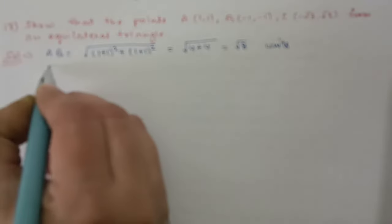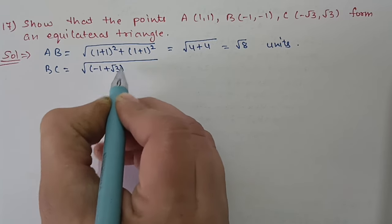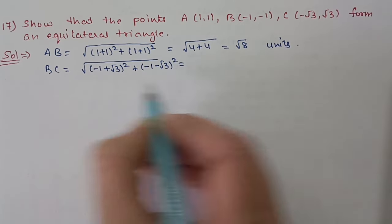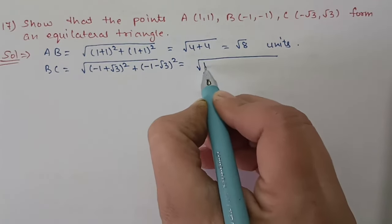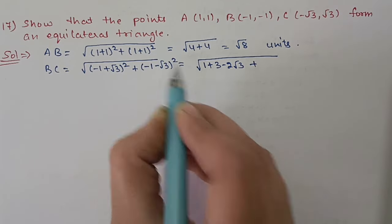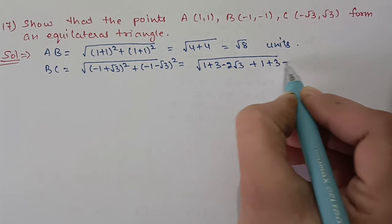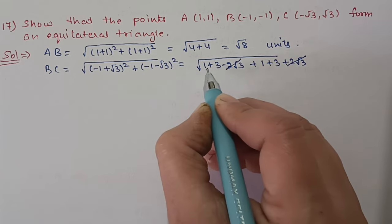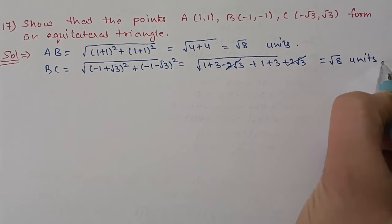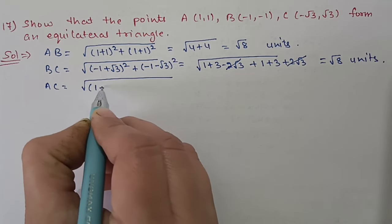Second side BC = √((−1−(−√3))² + (−1−√3)²). Applying the formula: (1 + 3 − 2√3) + (1 + 3 + 2√3), the 2√3 terms cancel, giving 1+3+1+3 = 8. So BC = √8 units.